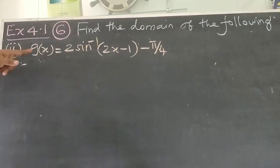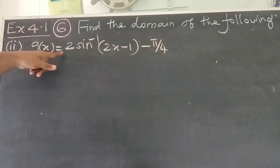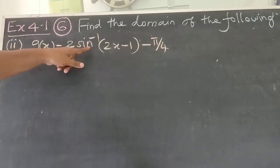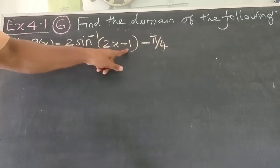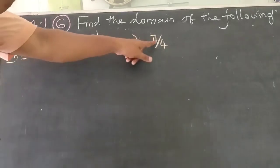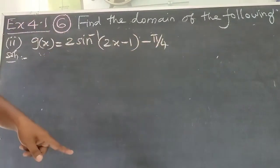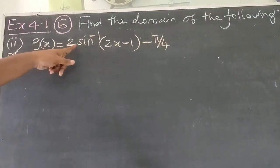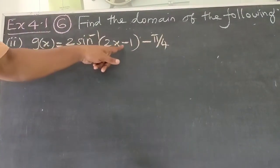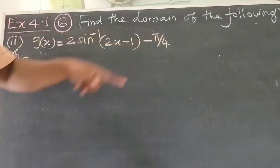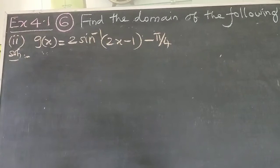2nd question: g of x equal to 2 sin inverse of 2x minus 1, minus 5 by 4. Easy question.